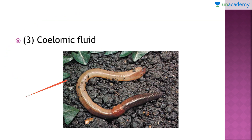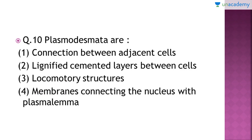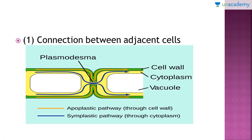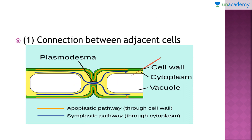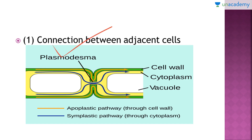The last question: what exactly are plasmodesmata? The right answer is option number 1 — plasmodesmata are connections between adjacent cells. Here you can see in the diagram two cells with a connection — a blue line going from one cell into the other. This portion is called the plasmodesma. Through plasmodesmata, most of the time materials are exchanged between cells.